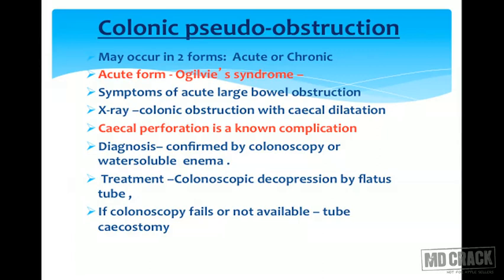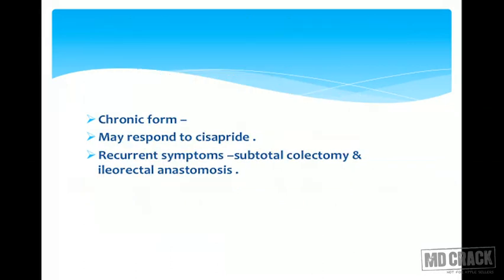Diagnosis is confirmed by colonoscopy or water-soluble enema. Treatment is colonoscopic decompression or by flatus tube. If colonoscopy fails or is not available, tube cecostomy is done. In the chronic form, it may respond to cisapride, and if recurrent, subtotal colectomy or ileorectal anastomosis is done.